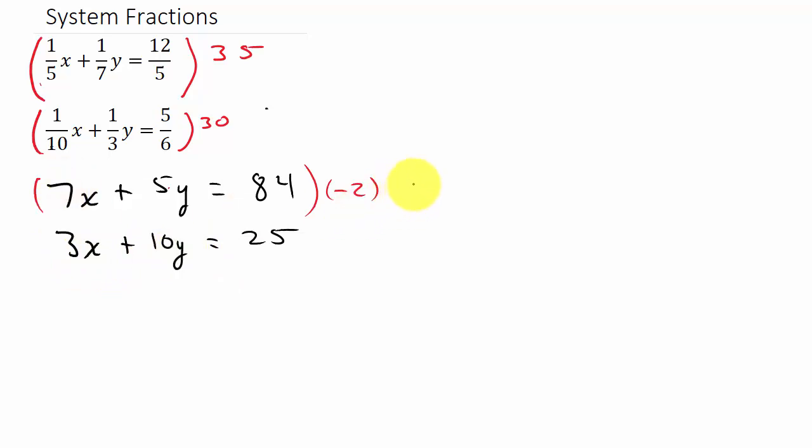Okay. Now if you did the negative 3 and the positive 7 to get rid of the x's, that would work. You would come out with the correct answer. Okay. Alright, so let's go ahead and multiply this out. So that's going to give me what? Negative 14x minus 10y equals, and let's see, that's going to be negative 168. And then we have what? 3x plus 10y equals 25. Okay.